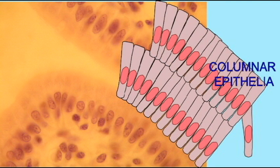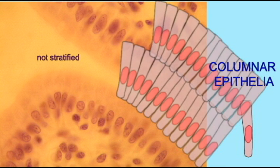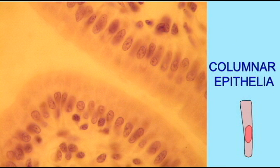So these are columnar cells. This is a simple epithelium rather than a stratified epithelium. If it were stratified, there would be multiple layers of cells, and clearly that is not the case. So this is an example of simple columnar epithelia.